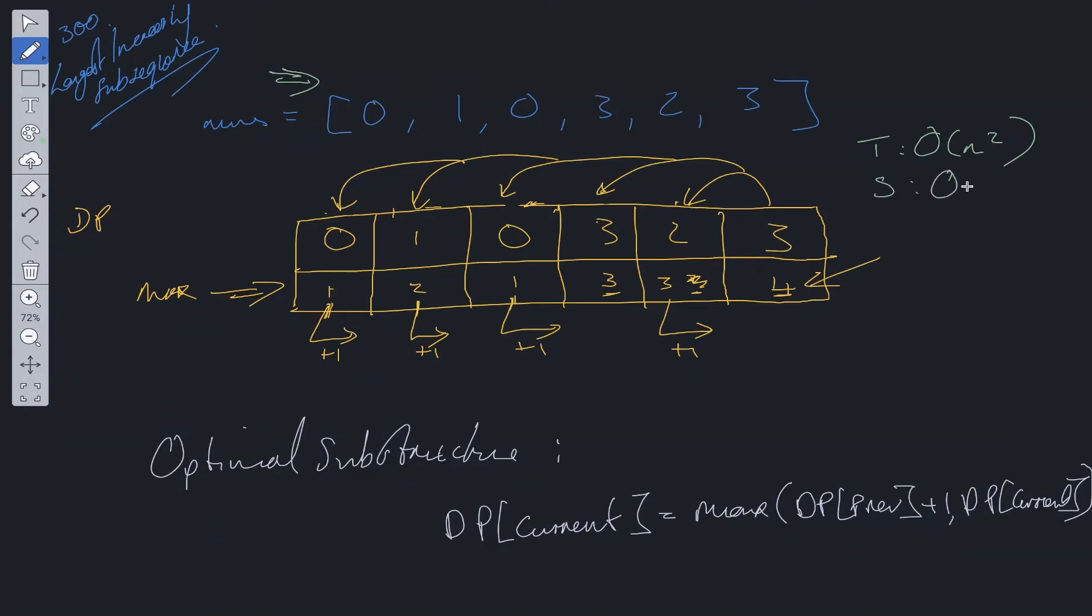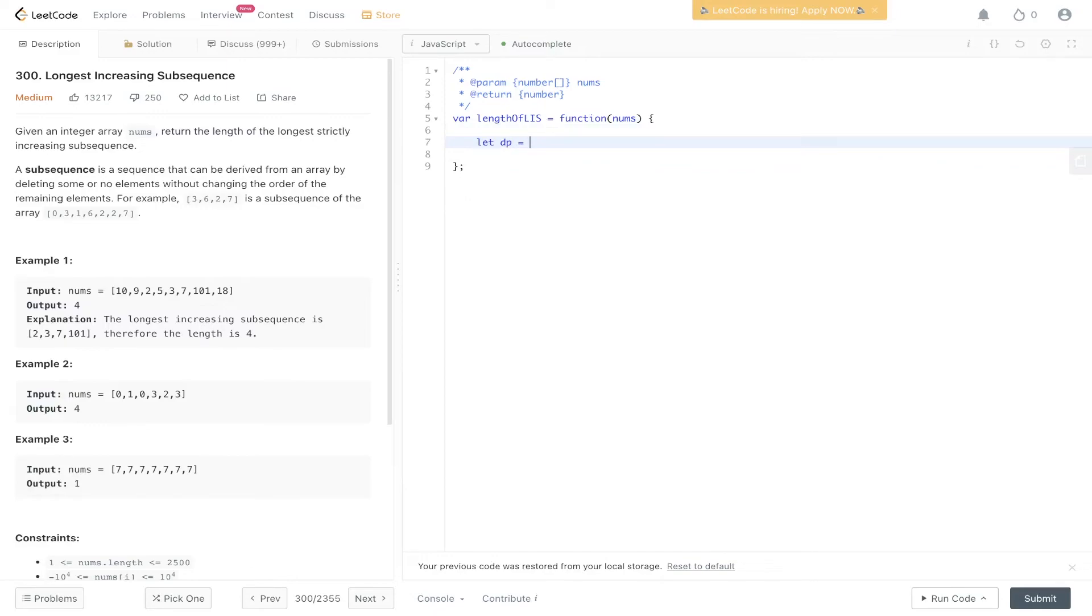Space complexity is going to be O(n), because we're using this auxiliary data structure to create this DP array. Let's create the DP array. It's going to be new array, nums.length, and we're going to fill these values, initialize them with 1.